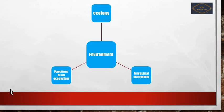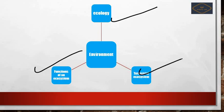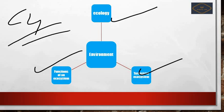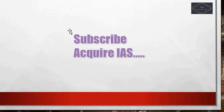With this we come to the end of the lecture. We have now covered three chapters of environment from Shankar IAS: Chapter 1 — Ecology, Chapter 2 — Functions of an Ecosystem, and Chapter 3 — Terrestrial Ecosystem. Please prepare Chapter 4 of Shankar IAS for tomorrow. Subscribe to Acquire IAS. Thank you and have a great day!